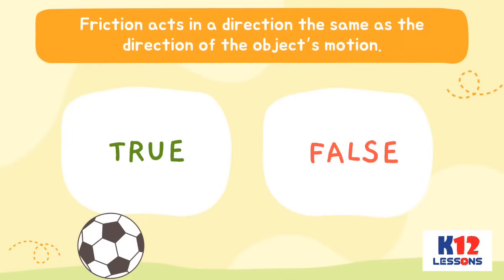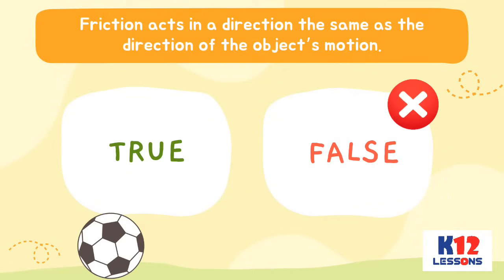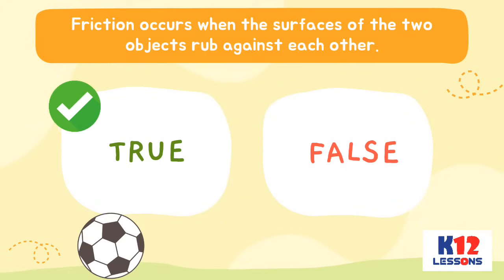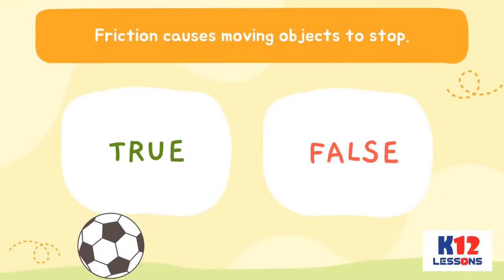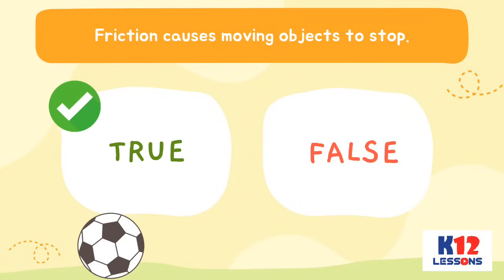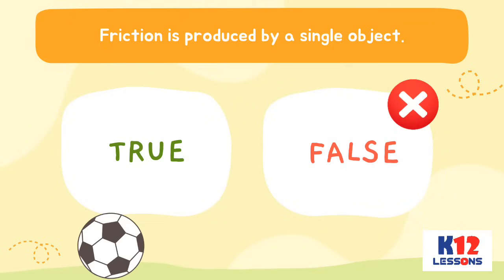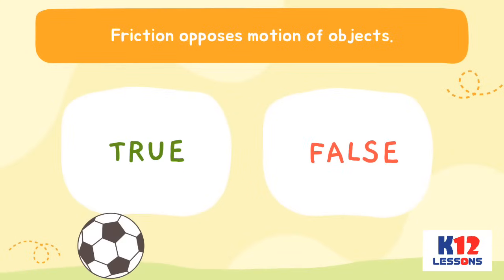Tell whether the statements are true or false. Friction acts in a direction the same as the direction of the object's motion. Friction occurs when the surfaces of two objects rub against each other. Friction causes moving objects to stop. Friction is produced by a single object. Friction opposes motion of objects.